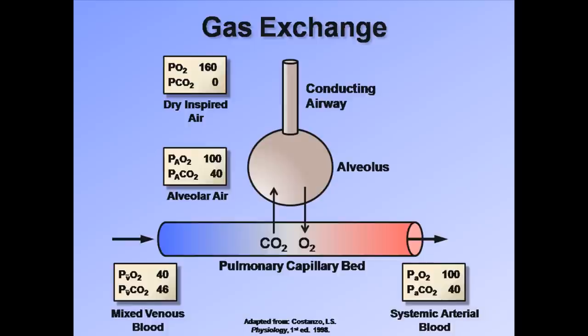In pathologic conditions in which the alveolar capillary membrane is disrupted, such as interstitial lung disease or the emphysema subtype of COPD, equilibrium is not reached, leaving the systemic arterial blood to have a lower partial pressure of oxygen as compared to alveolar air.